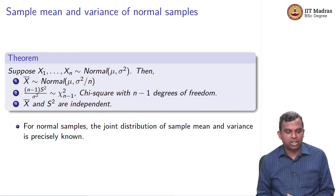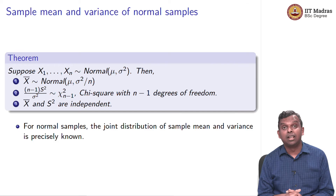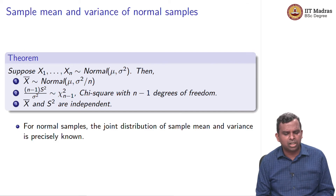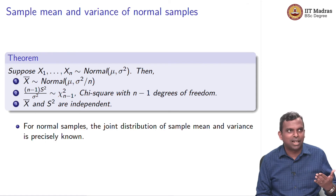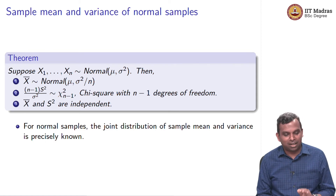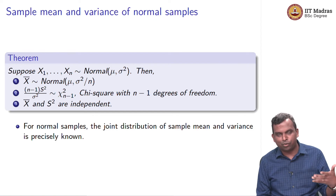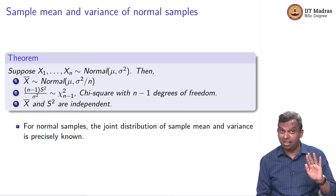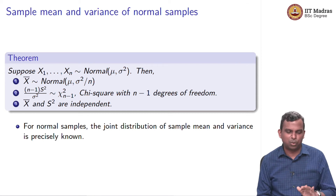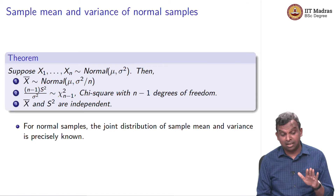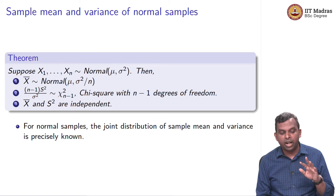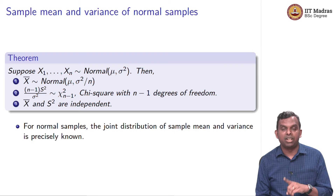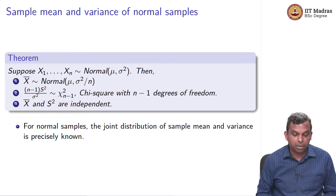We are now ready to state the main result about the distribution of the sample mean and sample variance for normal samples. We will not prove this in detail — it takes a lot of calculation — but the result is important and we should remember it. The joint distribution of the sample mean and sample variance is known, and the theorem states it clearly.